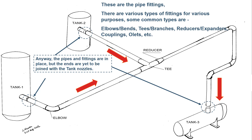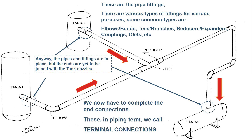Pipe connections with a tank or any such equipment are known as terminal connections, also known as spec break joints. Piping and equipment use different design codes. So on one side of the joint, pipe specification is applicable, and on the other side, equipment specification is applicable. Simply put, this is an interface point between two different disciplines: piping and equipment.